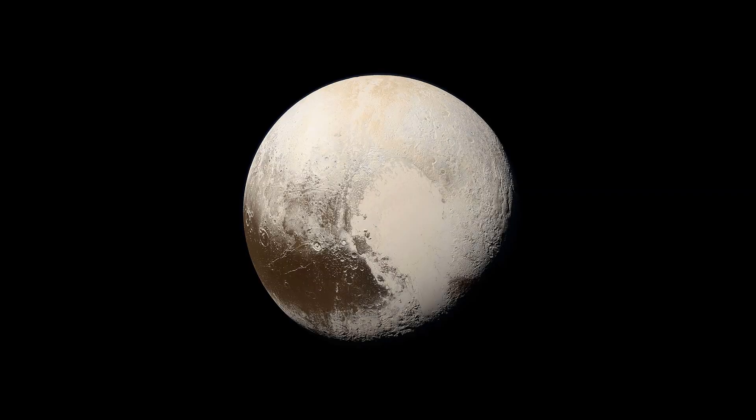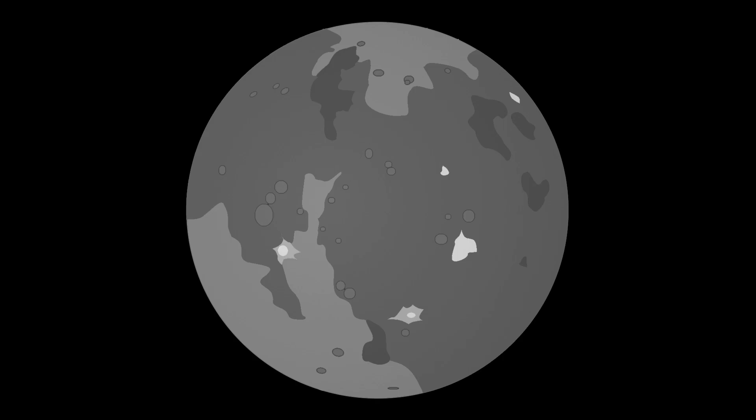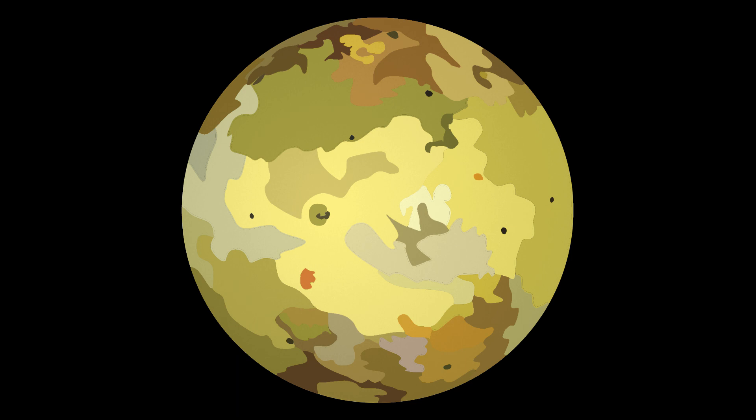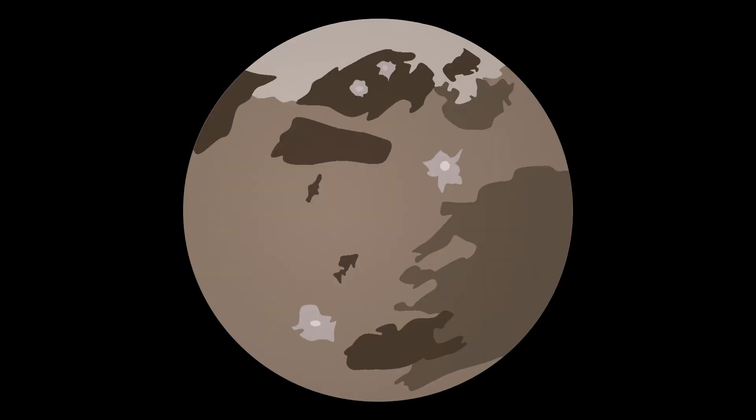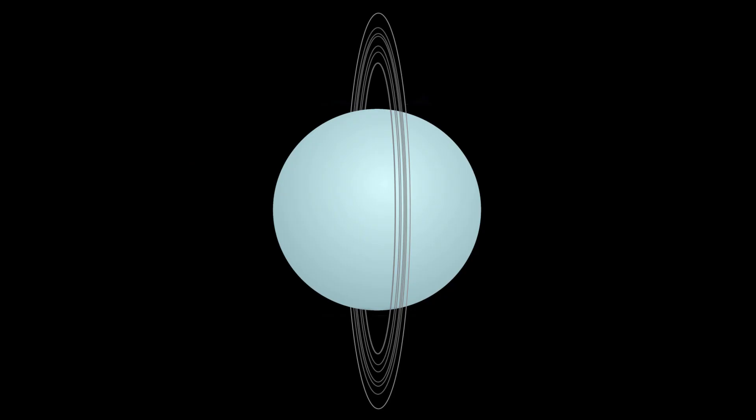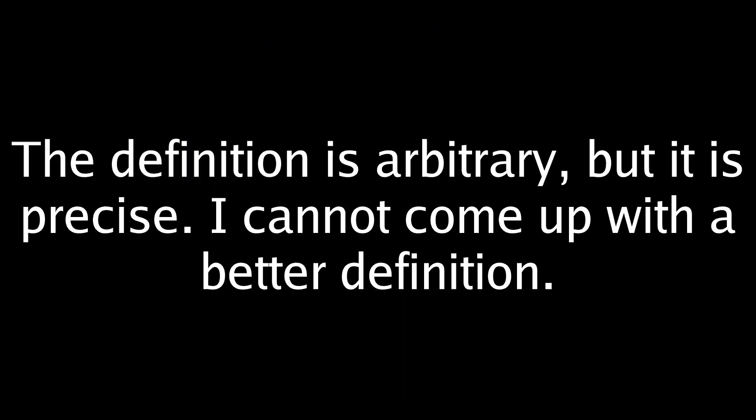Under the new definition, Pluto, with a mass of 1.3 times 10^22 kilograms, would be classed as a planet, and so would the dwarf planet Eris. The overall number of planets in the solar system would become 17. The planets would be Mercury, Venus, Earth, the Moon, Mars, Jupiter, Io, Europa, Ganymede, Callisto, Saturn, Titan, Uranus, Neptune, Triton, Pluto, and Eris.